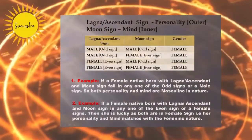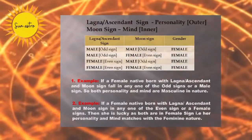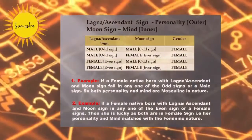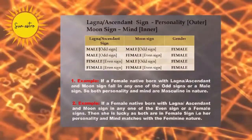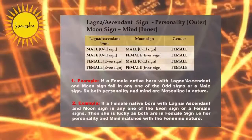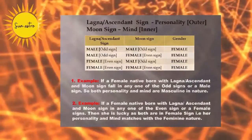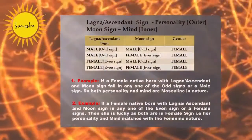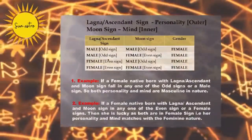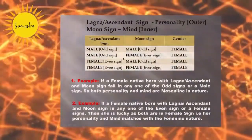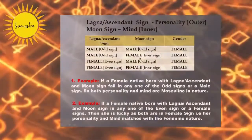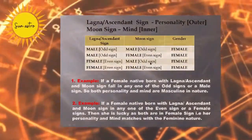If a female native is born with the Lagna and the Moon sign in any one of the female signs, then she is lucky as both the personality and the mind match with the feminine nature. In the same way, we can consider the other categories shown here by considering the Lagna as the personality and Moon sign as the mind.